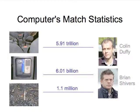The computer's match statistic for the matchstick on the side of the road was about a million to Mr. Shivers. This is after the genotypes have been computed and comparisons are made. The number was about 6 billion for the cell phone to Mr. Shivers, and about 6 trillion for another suspect, Colin Duffy, to the passenger side safety belt. Since these two items were directly linked to the crime, Mr. Shivers was convicted and sentenced to 25 years. Mr. Duffy was believed by the judge to be in the car but was not linked to the crime.